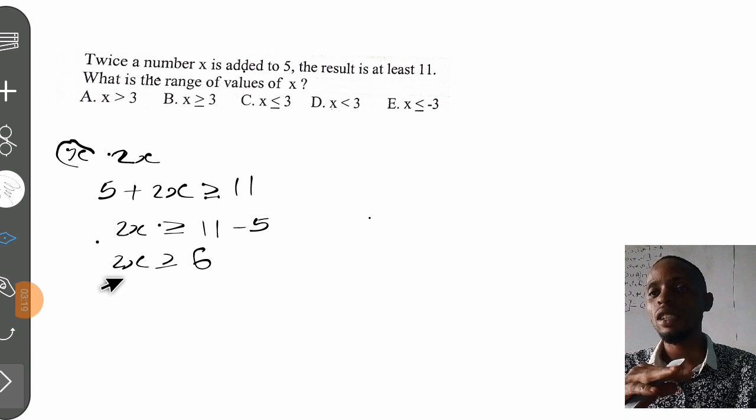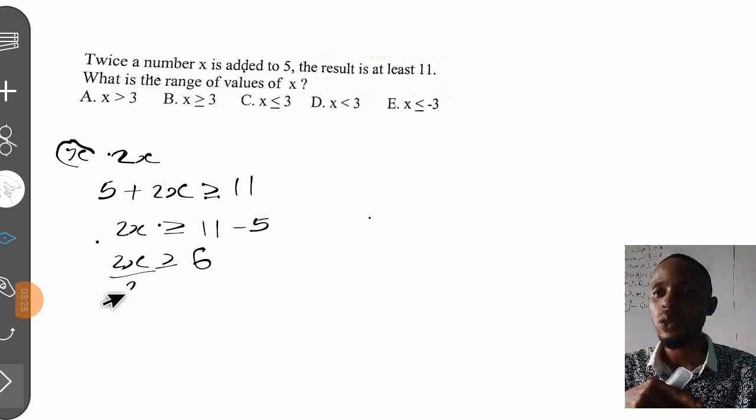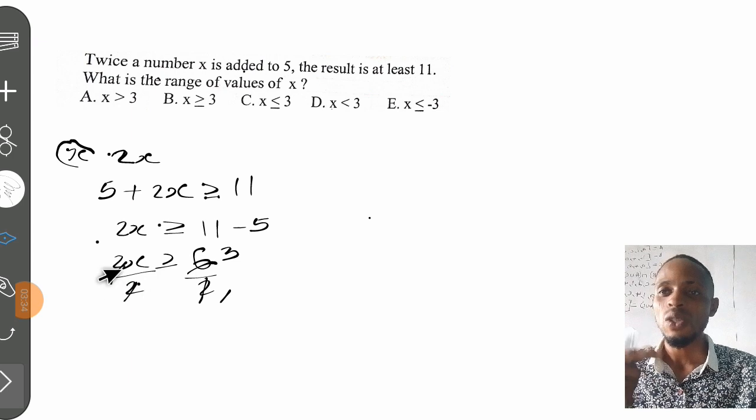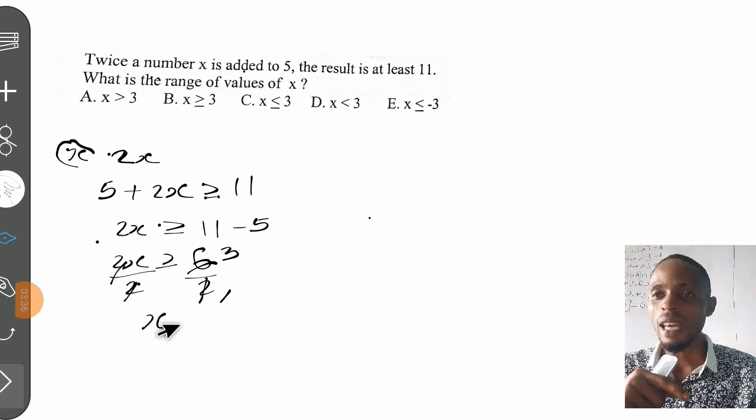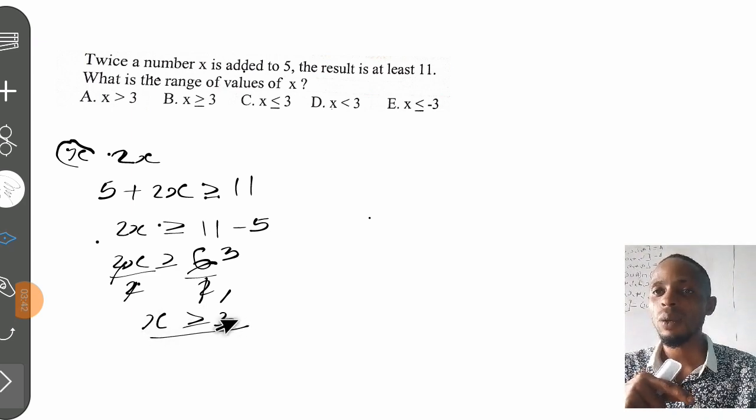Next, we divide both sides by the coefficient of x, which is 2. Dividing both sides by 2, the 2s cancel on the left. We have 6 divided by 2, which gives us 3. Therefore, our answer is x ≥ 3. The range of x is x ≥ 3.